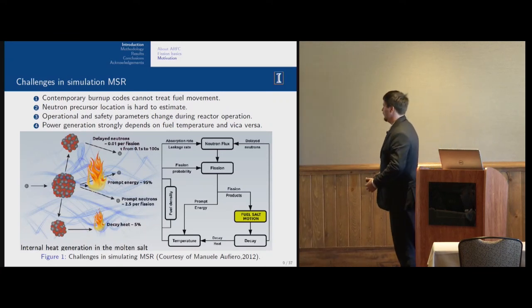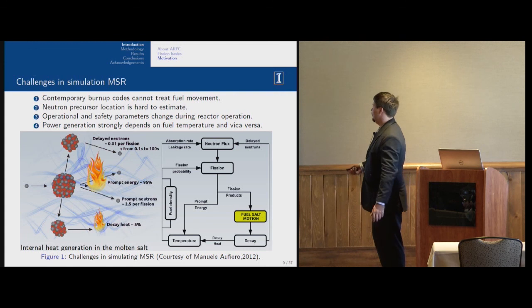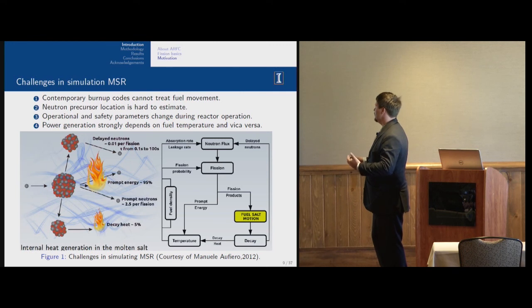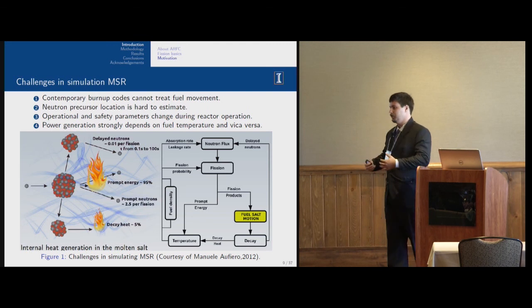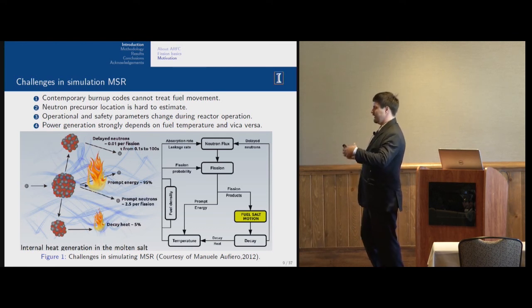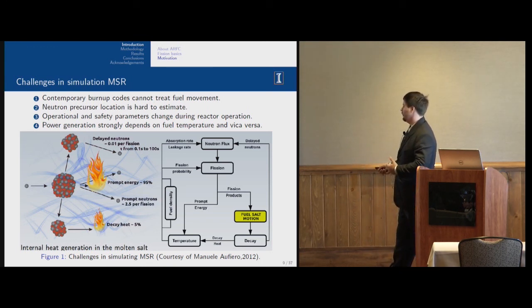But of course, there's a lot of challenges to model this type of reactor, and we have to model it carefully before trying to build it. For conventional light water reactors, we have only two coupled physics: neutronics and thermal hydraulics. We have to estimate neutron flux, then we can estimate fission. Based on this information, we can say what would be heat generation in the fuel, determine temperature, and then there's coupling. Our density changes and our nuclear data also changes.